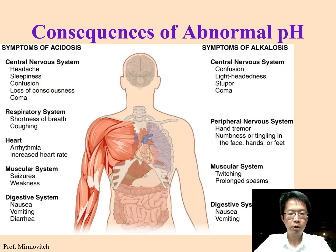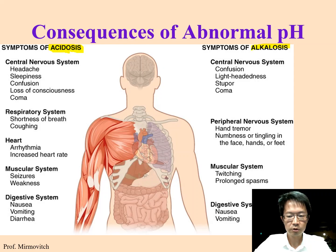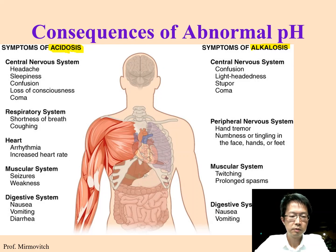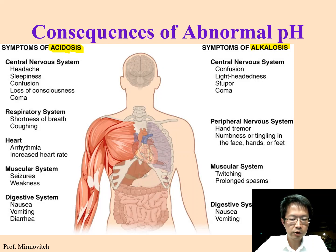If your blood is too acidic, we call it acidosis. If your blood is too basic, we call it alkalosis. If either condition is too serious, both acidosis and alkalosis can cause coma.